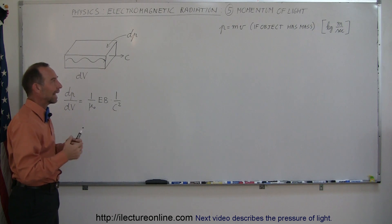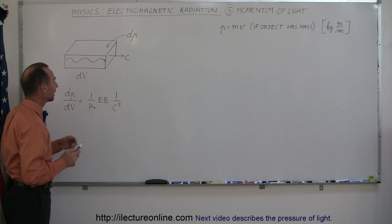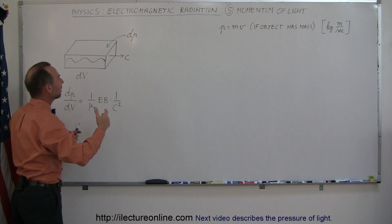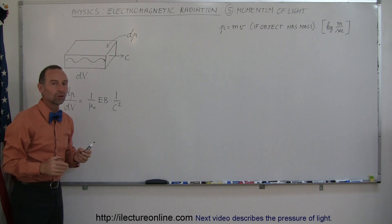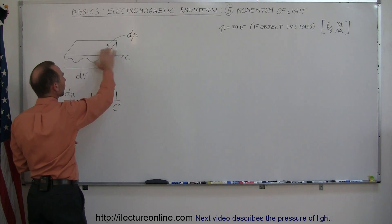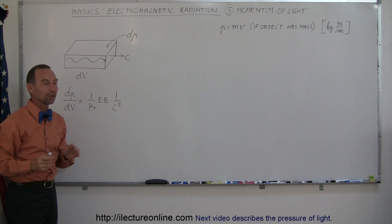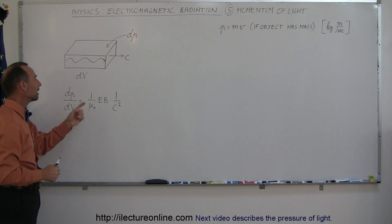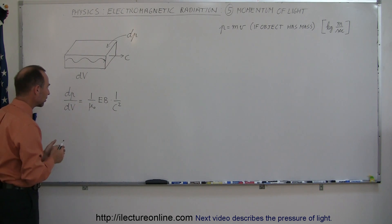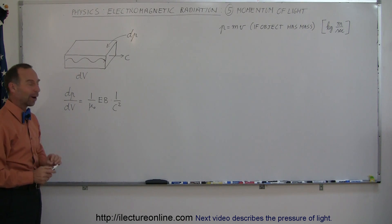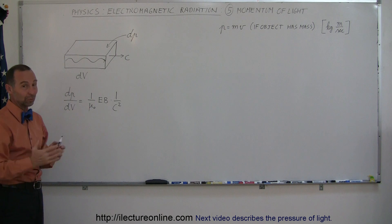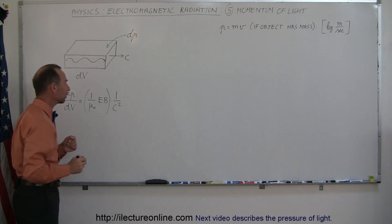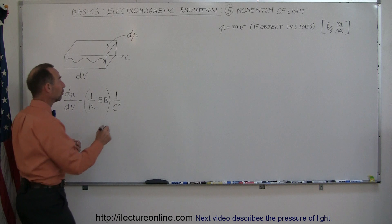Let's try to figure out how that works. Assume we have a certain volume in space that contains electromagnetic radiation, like light, and that it contains a certain amount of momentum. We call the momentum of that volume dp, and the volume dV. The ratio of momentum per unit volume can be defined as one over mu-naught times E times B, times one over c squared. You might ask where that comes from — hang on, we'll derive it in a moment. First, notice that this part of the equation should look familiar, because that is the magnitude of the Poynting vector.